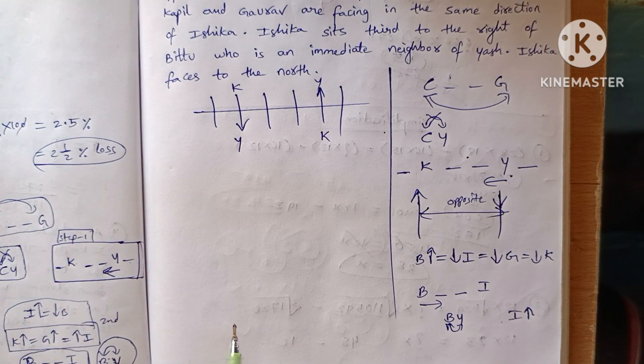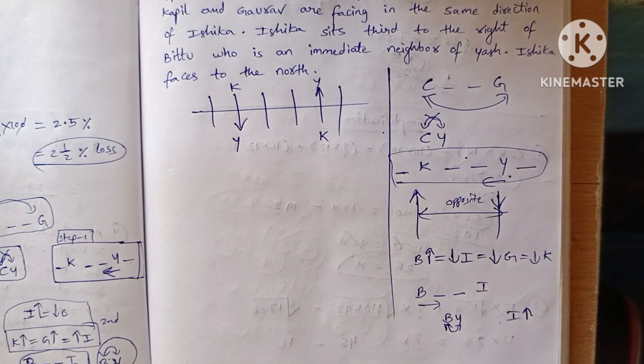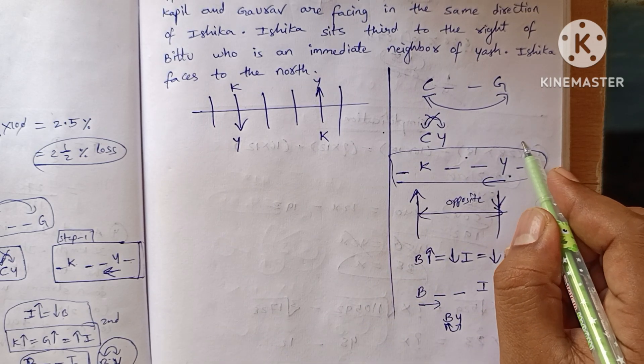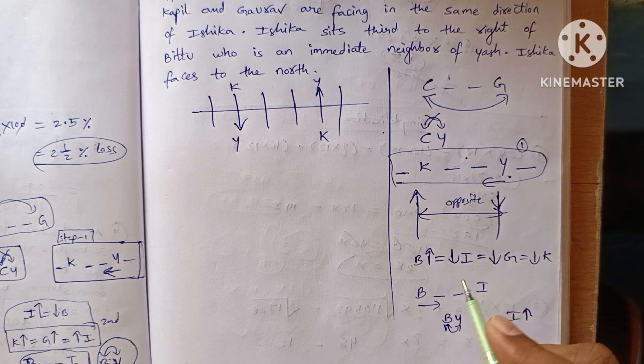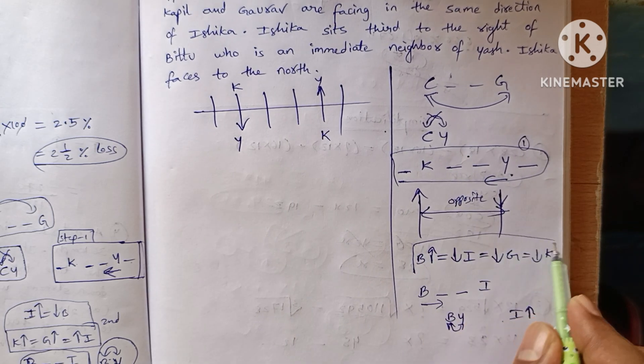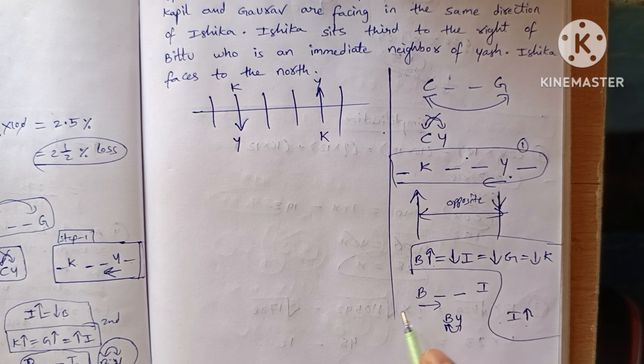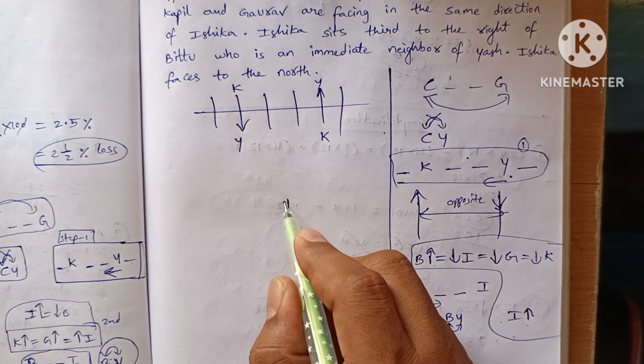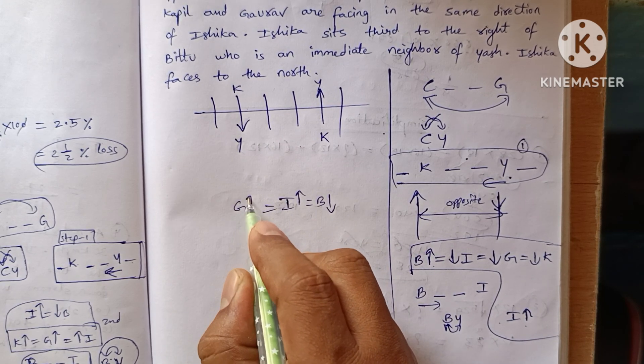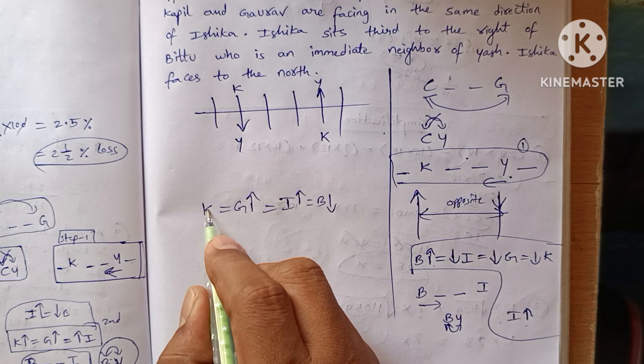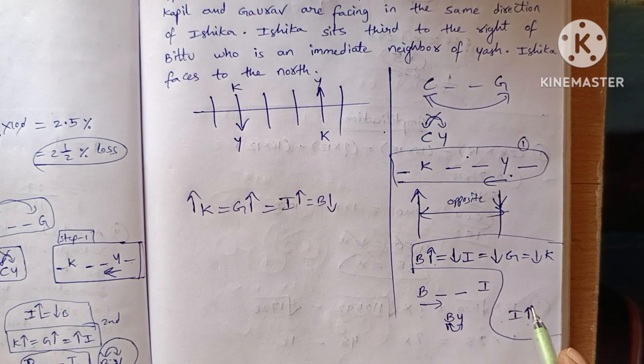Let's see where to start. First step will be this one, completed. Second step, this is one. Second step is, let's see this one. Ishika faces north means B2 faces south. Ishika north, B2 faces south, Gauru faces north and Kapil also faces north. This is the second one.